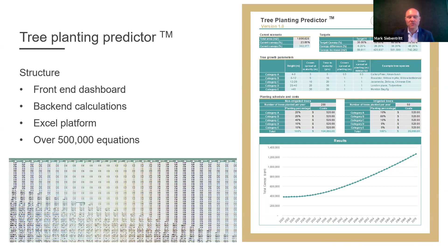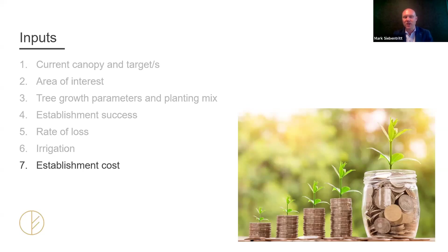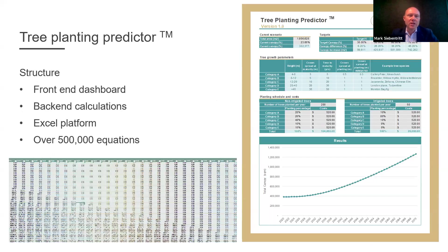Some of those inputs are easy to attain; some will come from expert knowledge from within your individual organisation. For current canopy, there's a range of different ways that data can be pulled together — you could be using iTree canopy or LIDAR-derived estimates of canopy. The tool is based in Excel, and we're currently looking at making it a fully enabled web-based tool.